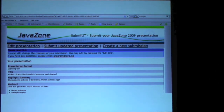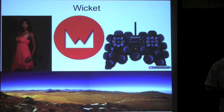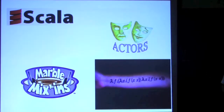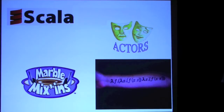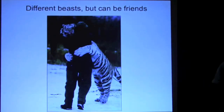On the one hand we had Wicket, which is a stateful component-based web framework written in Java. It has a really nice Model-View-Controller implementation. On the other hand we have Scala, which encourages a more functional approach using immutable objects, first-class functions, traits, mixins, and things like that. So how do these mix? How do they work together?